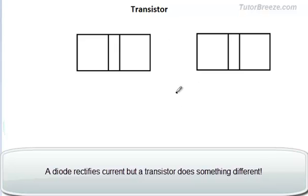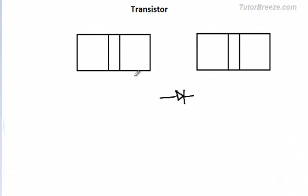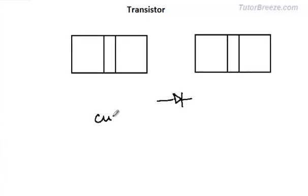You know that a diode rectifies current — it allows current to flow in only one direction — whereas a transistor is a current amplifier.